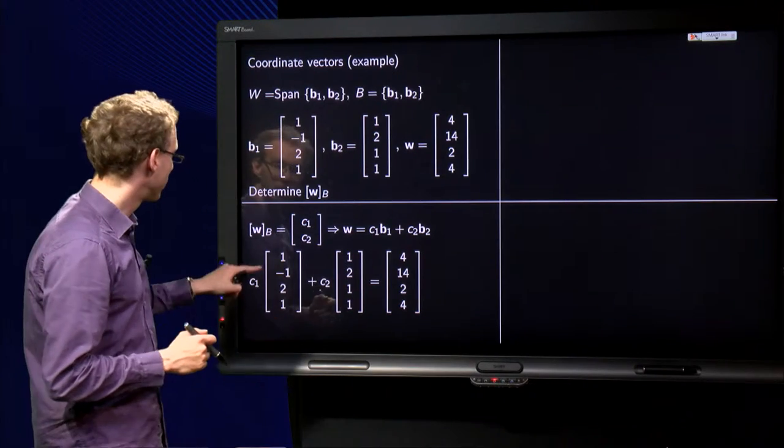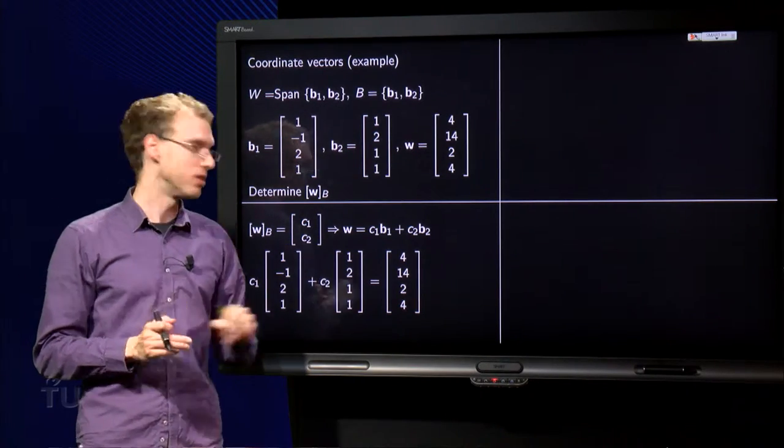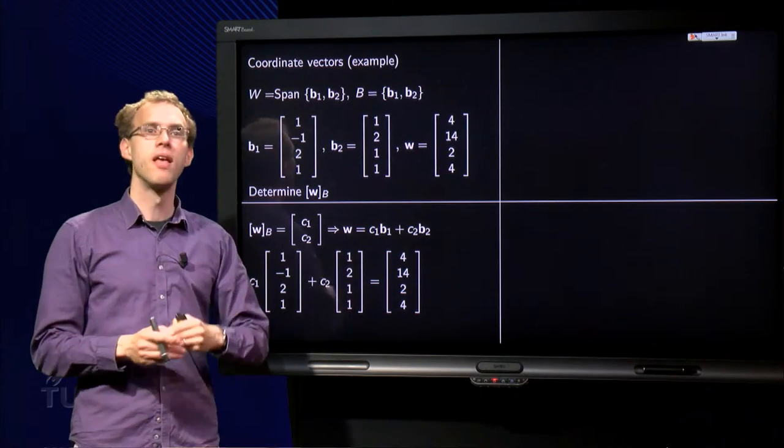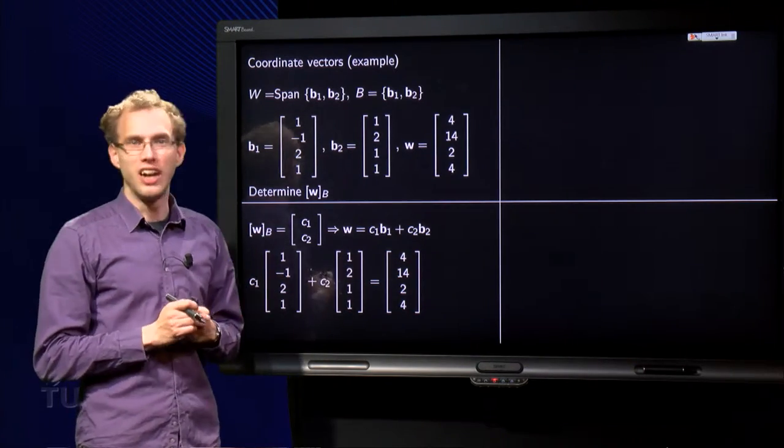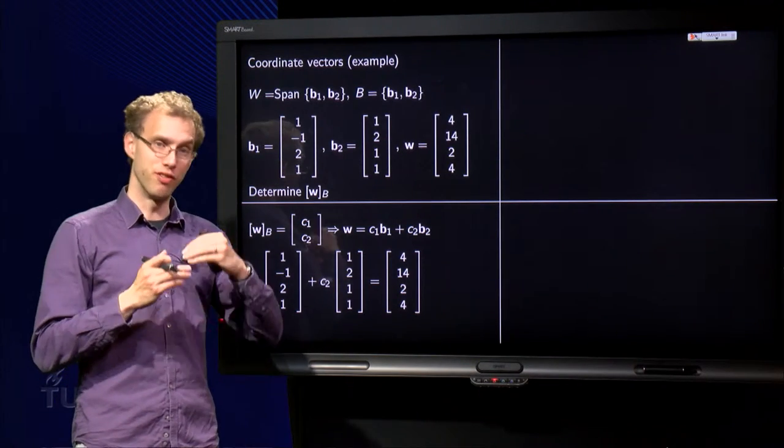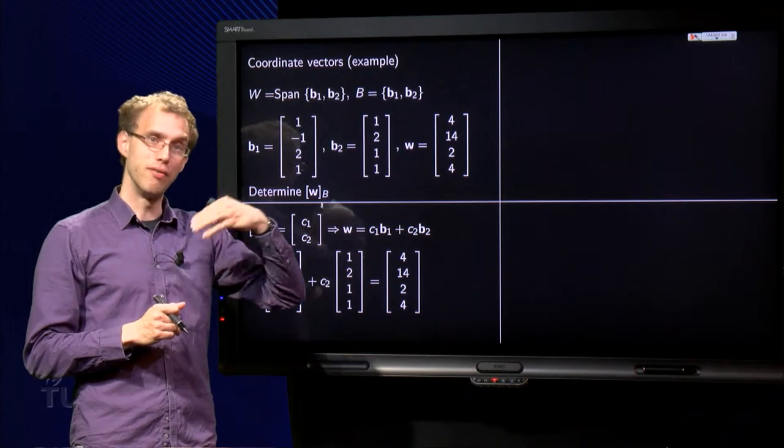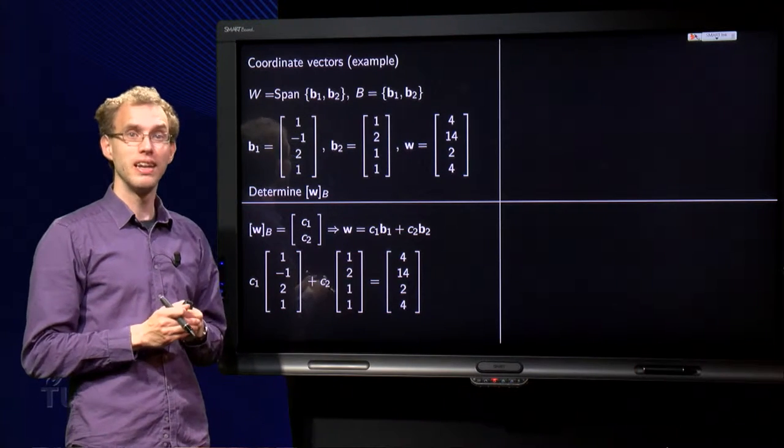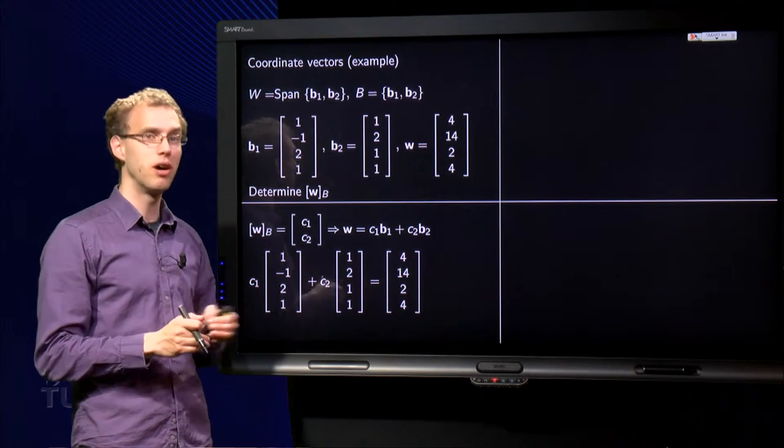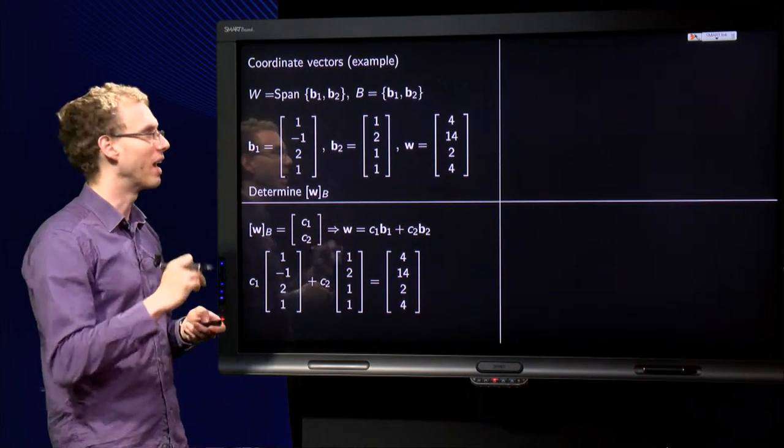If you write down numbers: c1 times b1 plus c2 times b2 equals w. Of course, you could just try some c1 and c2, but you recognize this is a vector equation. A vector equation is equivalent to a linear system, and we know how to solve a linear system. We use the augmented matrix and row reduction, so there we go again.